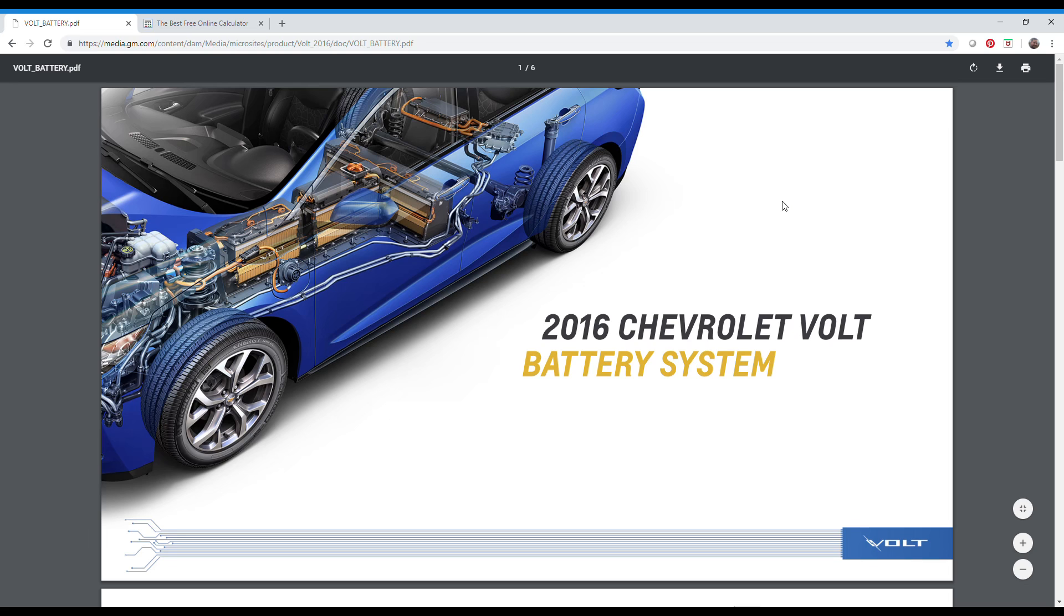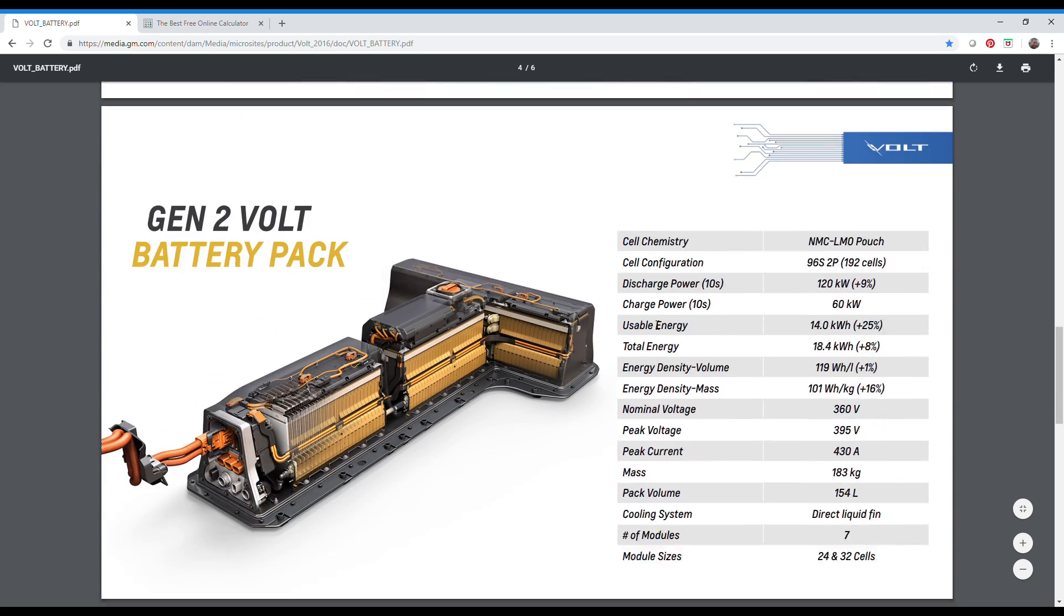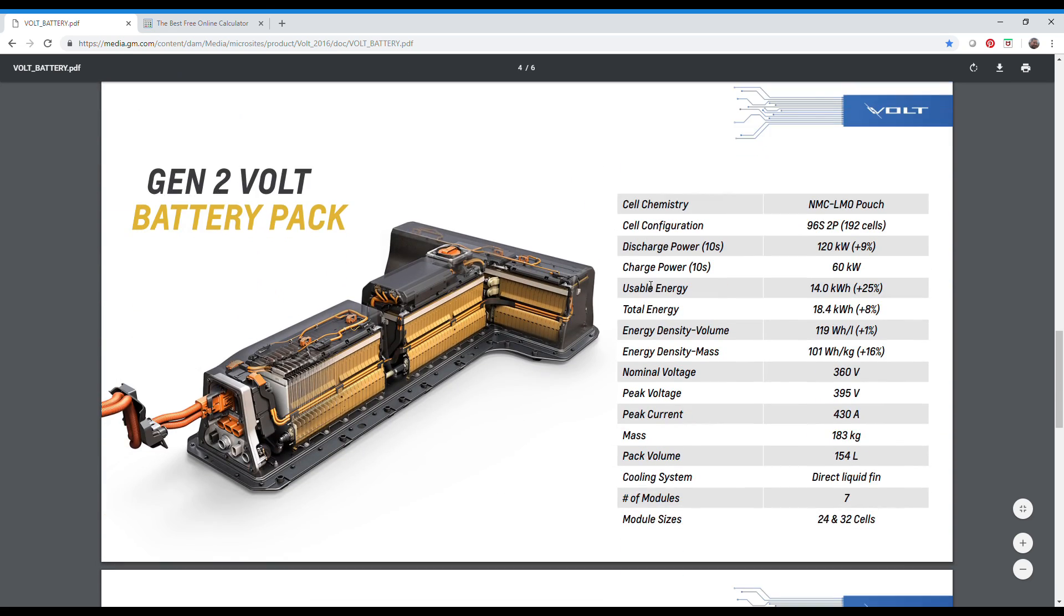Here's a brochure I found online for Chevy Volt battery systems, and it shows the Generation 1 battery pack and the Generation 2. The battery that I have is the Gen 2. It says the total energy is 18.4 kilowatt hours, and it says the usable energy is 14 kilowatt hours.